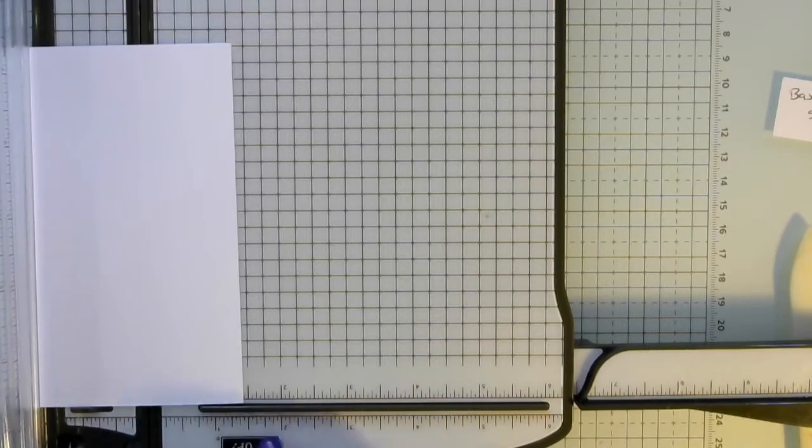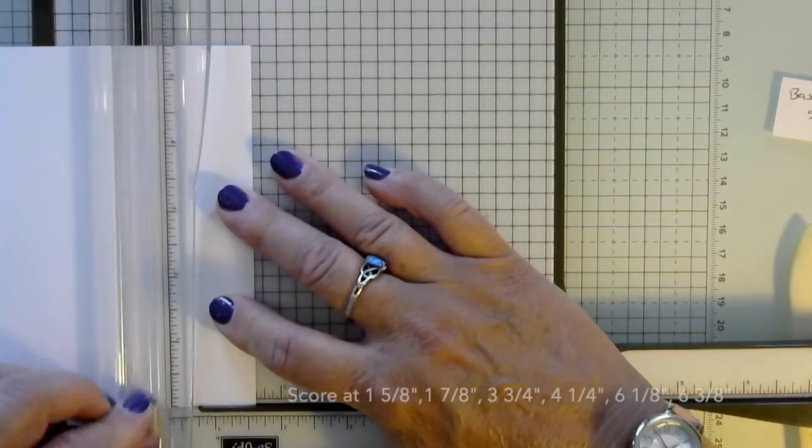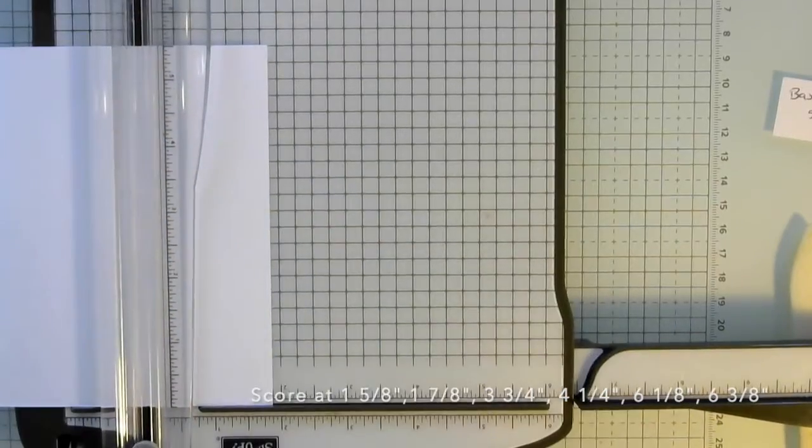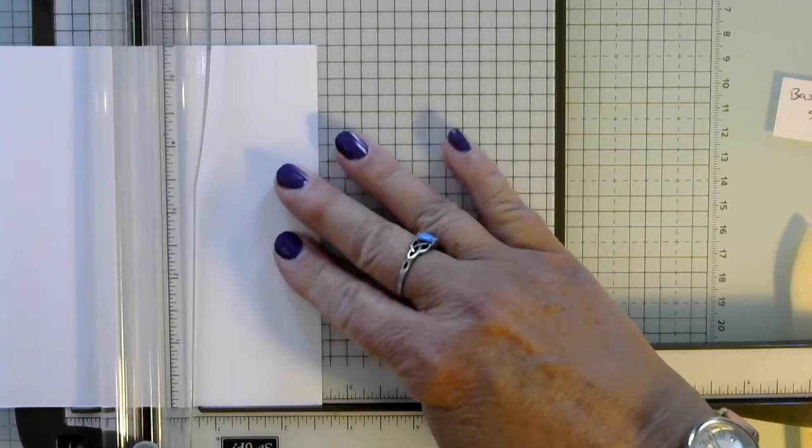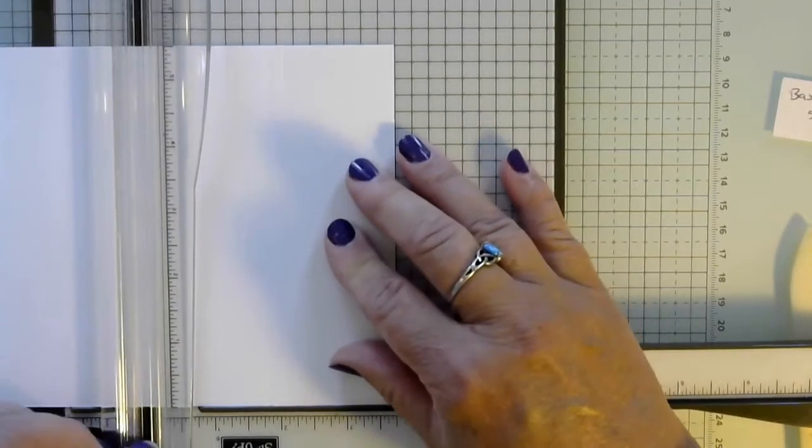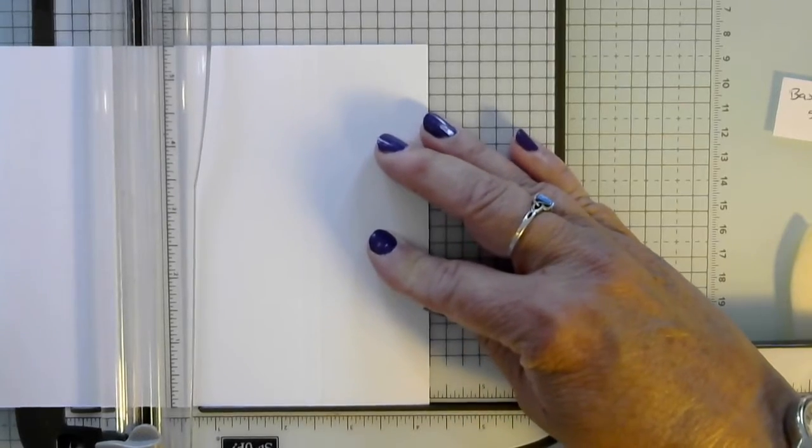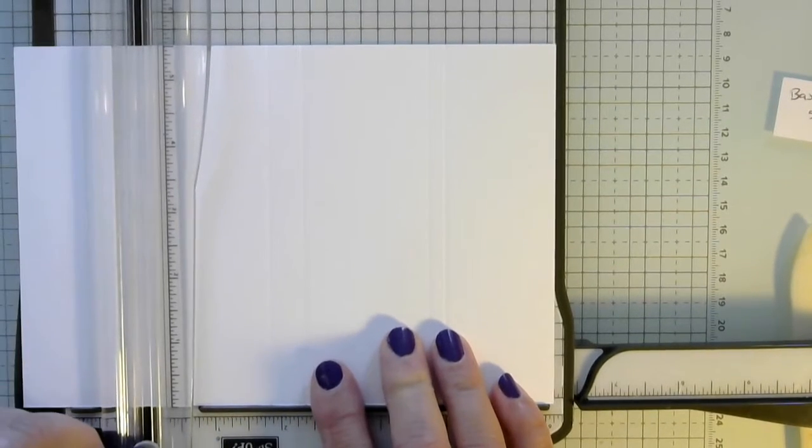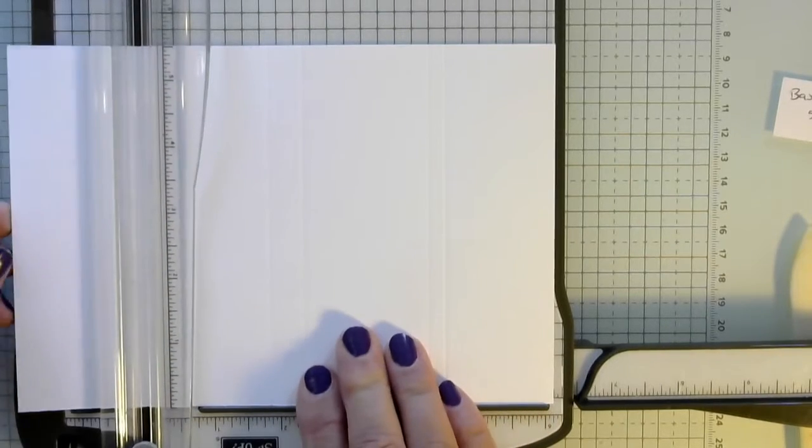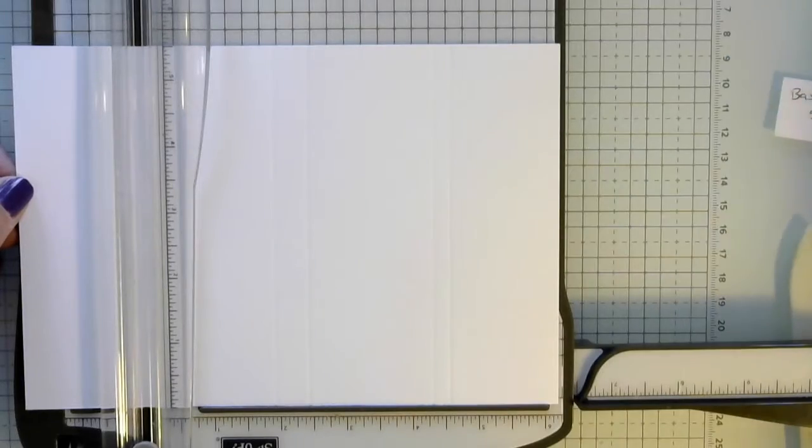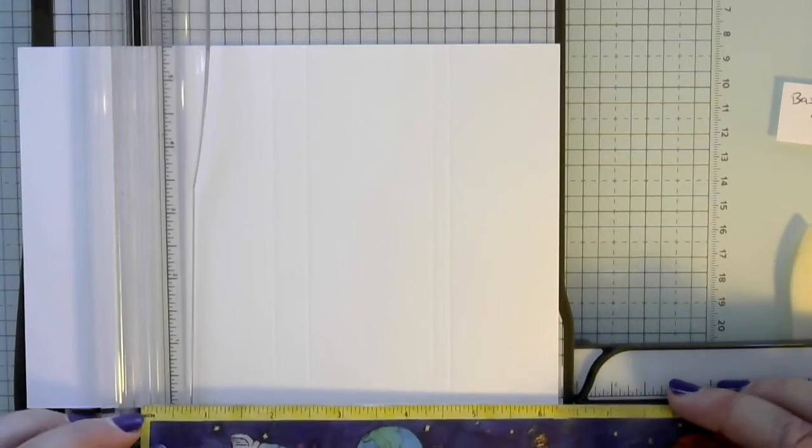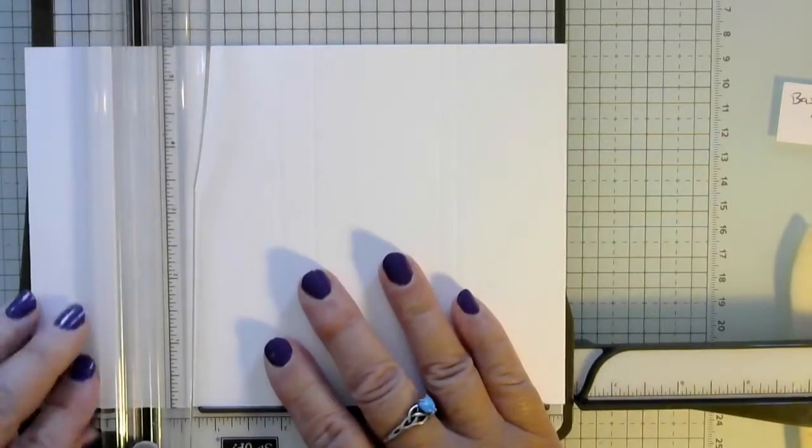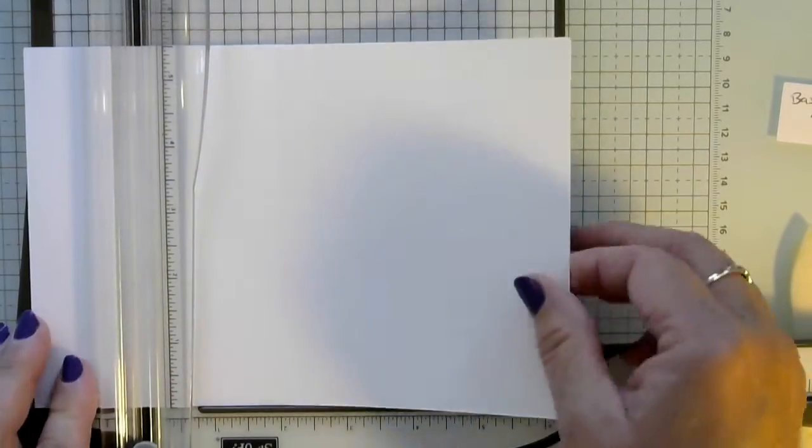So we're going to score it at 1 5/8, 1 7/8, 3 3/4, and this one gets a little bit tricky on my pullout, so it should be right past the line there. Then we should be done with our scoring.